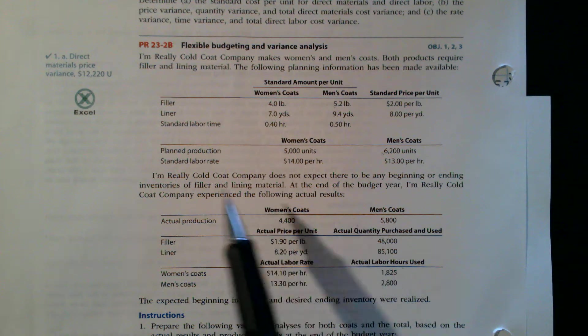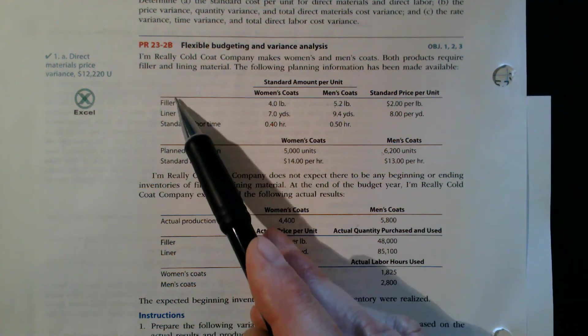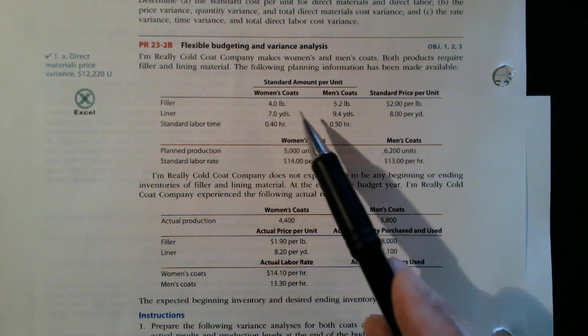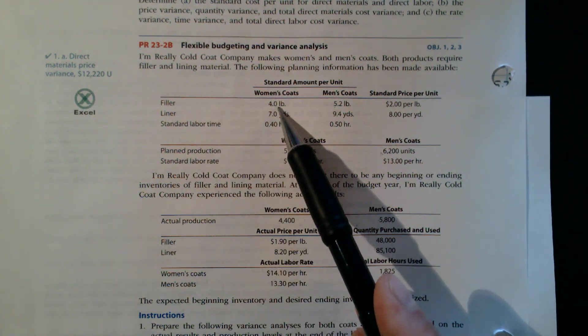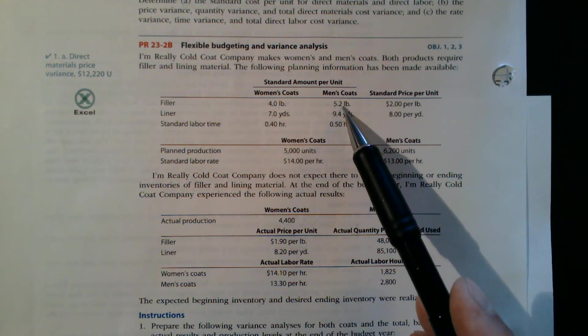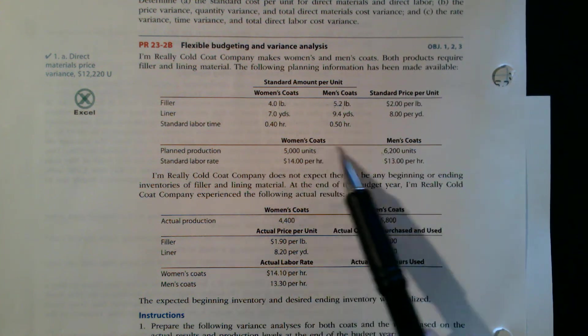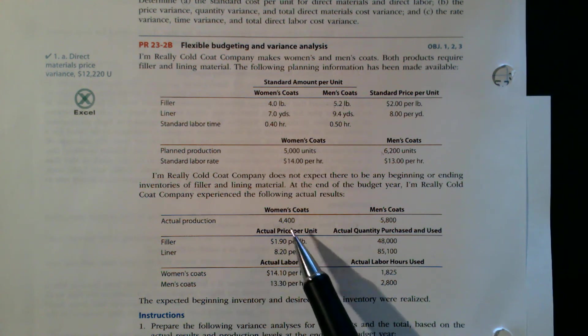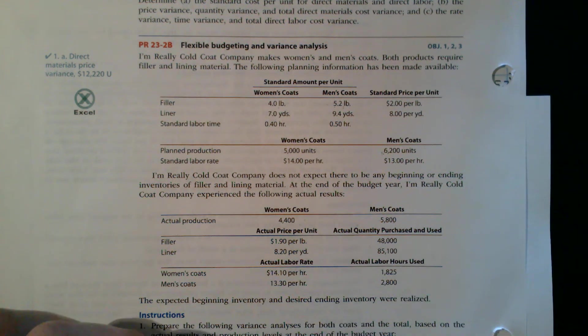So in this case, it's a company that makes jackets. Really Cold Coat Company. That's pretty creative. So they have two types of material, filler and liner. So we need to look at both of those. How did we do with respect to those two materials? So here we have standard information, and I'm just going to talk about filler for now. So women's coats need 4 pounds of filler, and men's need 5.2. That's the plan or the standard for it, and it should cost $2 per pound. I have some information here on planned production. I would ignore that. And then I've got actual production. They actually produce 4,400 women's coats and 5,800 men's coats, and here's what the price they paid and how much they used.